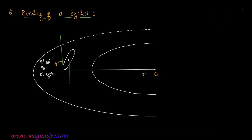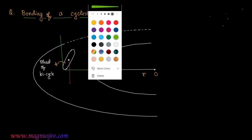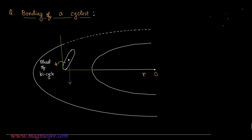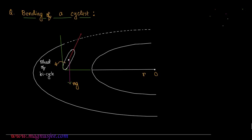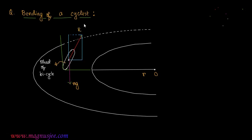The weight of the bicycle, that is mg, is acting vertically downwards. R is the normal reaction acting on the wheel of the bicycle, applied by the curved road.